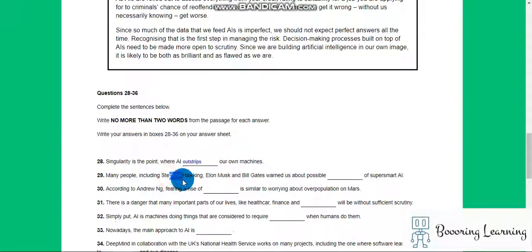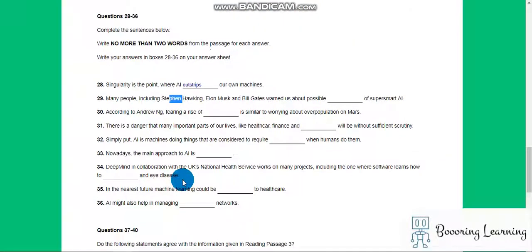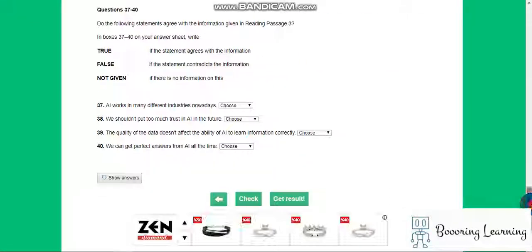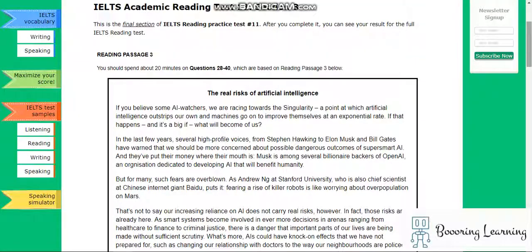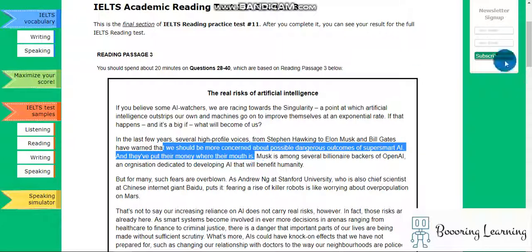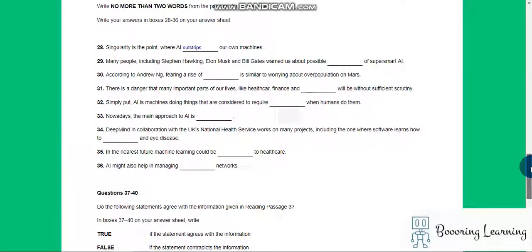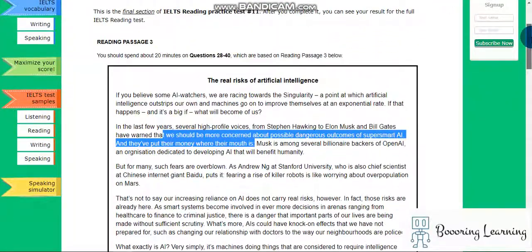Many people including Stephen Hawking, Alan Musk, and Bill Gates warned us about possible... okay I think I have to read. Many people including Stephen Hawking, I just have to search their name. We should be more concerned about dangerous outcomes, concerned about outcomes.